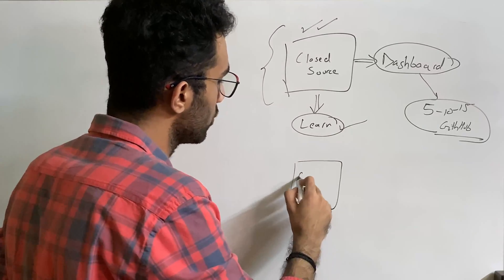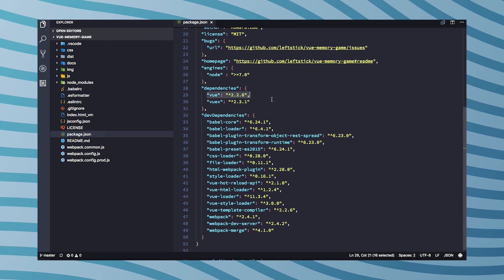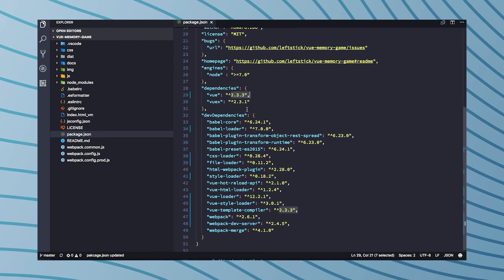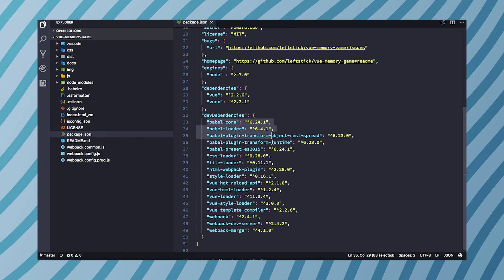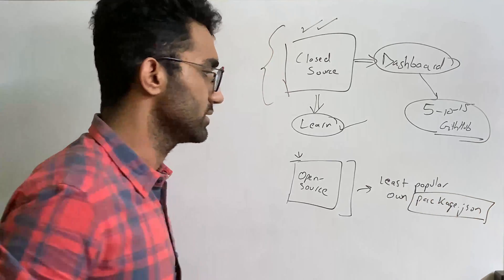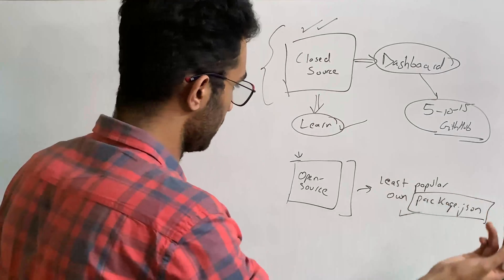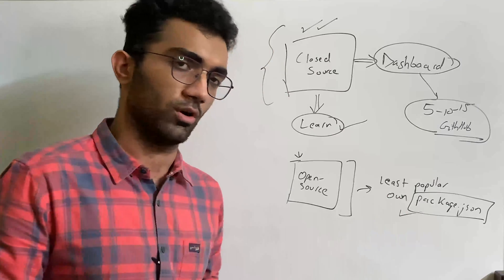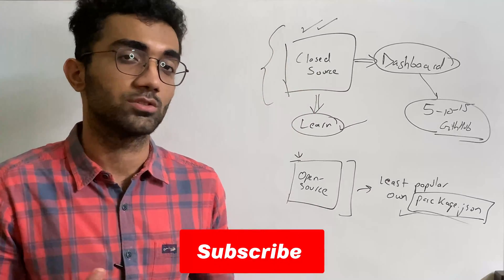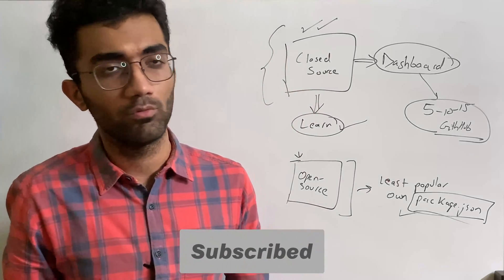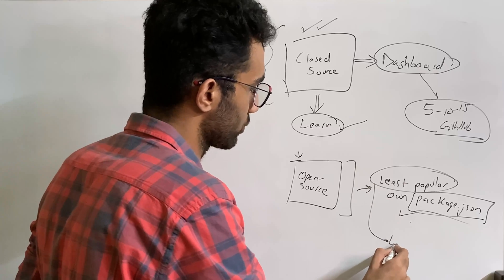The way I've found helpful is to go ahead and start with the least popular library in your own package.json. Go into your package.json, pick up projects you've built so far, and see which is the least popular package you've used. When you do that, it will be beneficial because you already know more or less what the software does, so you might have ideas on how to improve it. The reason I say the least popular is that chances are it will also be the least complicated.